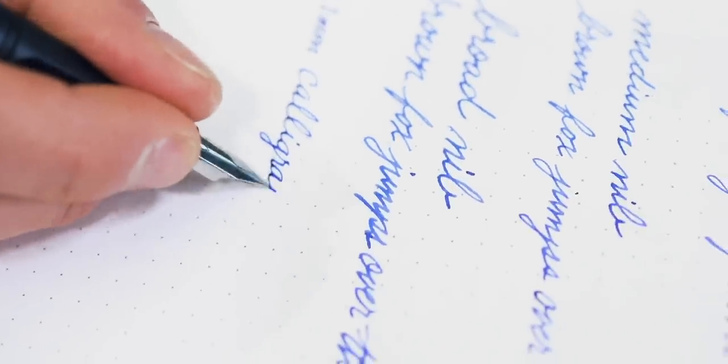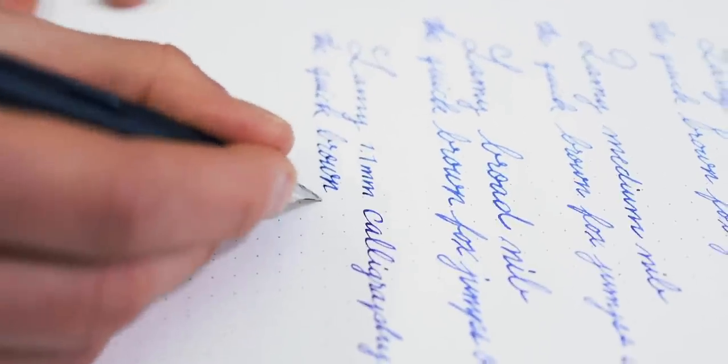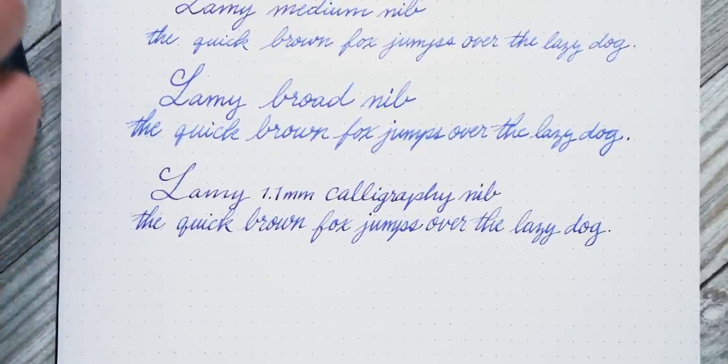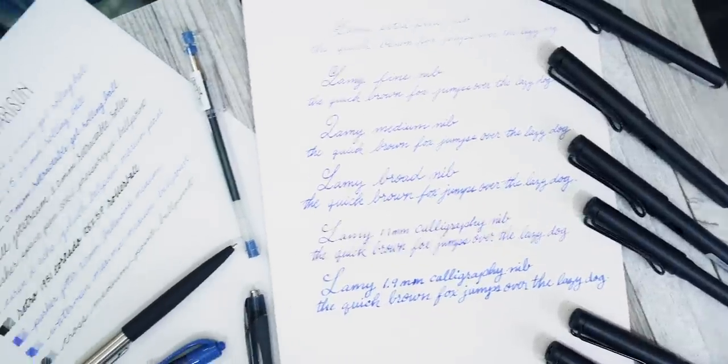As you're browsing around, keep in mind that there are varying degrees of stub nibs as well as flex. Stub nibs are a bit easier to sort out because they usually indicate a point size such as 0.8 millimeters, 1.3 millimeters, 1.9 millimeters, and so on.